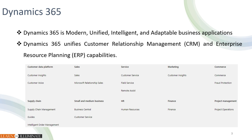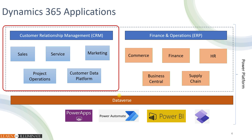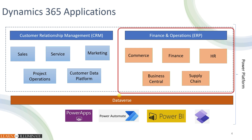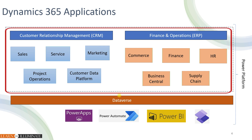Next, we will move on to what is Dynamics 365. Dynamics 365 is a unified business application from Microsoft. It has a set of applications from CRM and ERP. Looking at this example, you can see there are a lot of applications — some are part of CRM and some are part of ERP. On the CRM side we have Sales, Service, Marketing, Project Operations, and Customer Data Platform. On the ERP side we have Commerce, Finance, HR, Business Central, and Supply Chain.